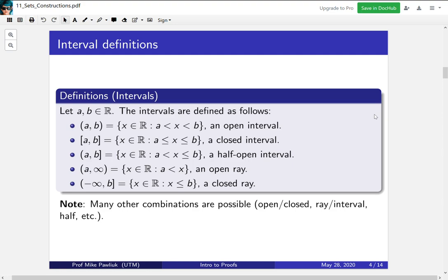We use the square brackets if we want to include both endpoints. This is called a closed interval. You can do half open intervals by using one round bracket and one square bracket. And if you want one of the sides to be positive infinity or minus infinity, you would have an open ray. Many other possible combinations can be made other than these five, but these five are just to give you an example of things you might use.